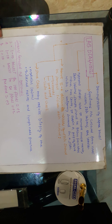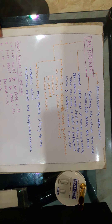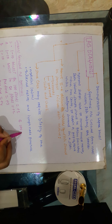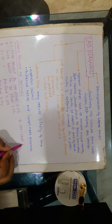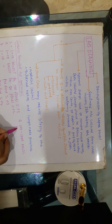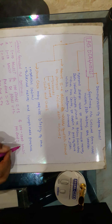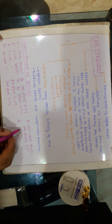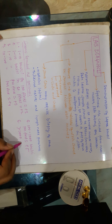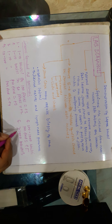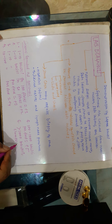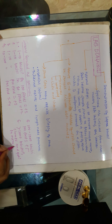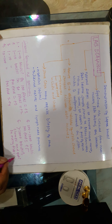10 to 100 bacilli per field is 4 plus; 100 to 1000 bacilli per field is 5 plus; and more than 1000 bacilli with clumps and globii in every field is 6 plus.